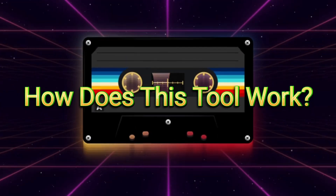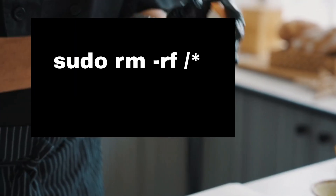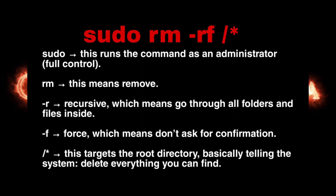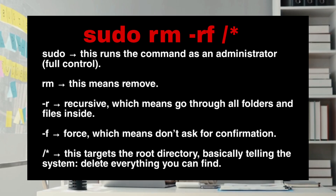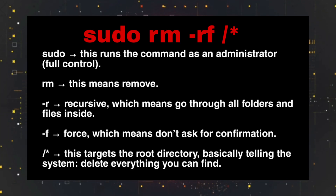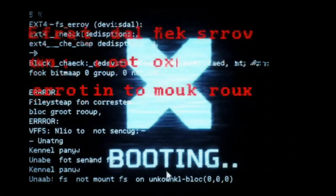The weapon behind these fake tools is often this single, dangerous command: sudo rm -rf /*. Let's break it down. Sudo runs the command as an administrator. rm means remove. -r means recursive, which means go through all folders and files inside. -f means force, which means don't ask for confirmation. /* targets the root directory, basically telling the system to delete everything it can find. So in plain English, it's saying: delete everything on this machine, no questions asked. And once this starts running with root access, your system files disappear one by one until nothing works anymore.